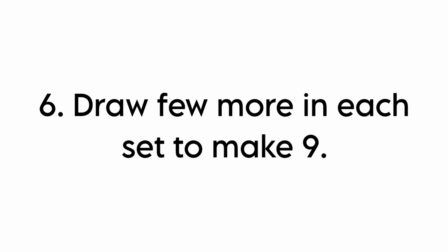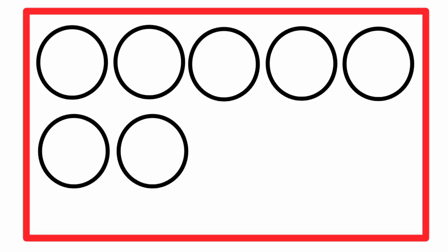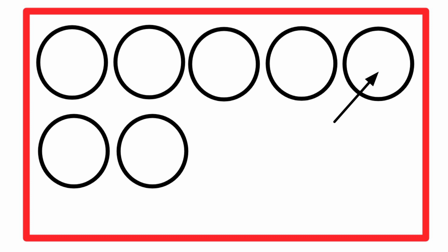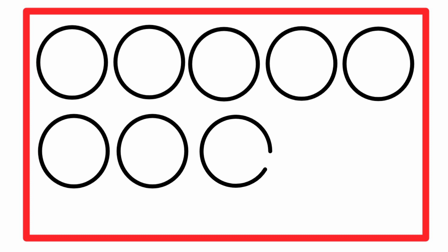Look at the sixth one. Draw a few more in each set to make 9. Here there are 1, 2, 3, 4, 5, 6, 7. There are 7 circles. We are going to draw the 8th circle and the 9th circle. So we got 9 circles.